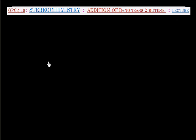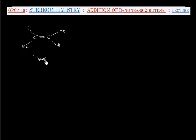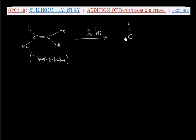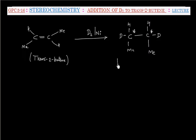In this lecture, we will discuss the addition of deuterium to trans-2-butene. This molecule is trans-2-butene. If deuterium is added in the presence of nickel, we have to add deuterium to both carbons — on this carbon and this carbon. Deuterium will be added and the double bond will be lost between these two carbons. So this carbon becomes chiral and this carbon also becomes chiral. The product has two chiral carbons.